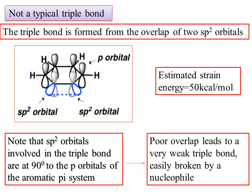Note that the sp2 orbitals involved in the triple bond are at 90 degrees to the p orbitals of the aromatic pi system. This means the pi bond is very weak. The poor sideways overlap leads to a very weak triple bond, easily broken by a nucleophile.